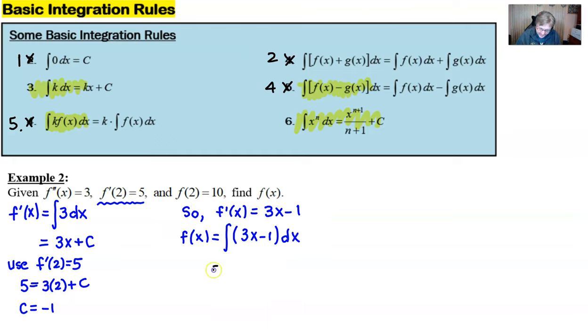If we go ahead and do that the anti-derivative of three times x would be three drops down, x would become x squared over two minus integral of one with respect to x is one times x and then we have another c.